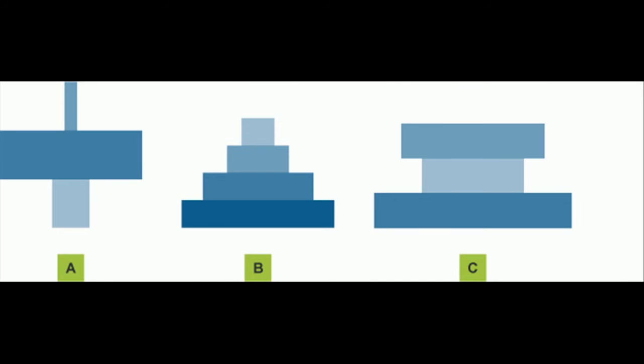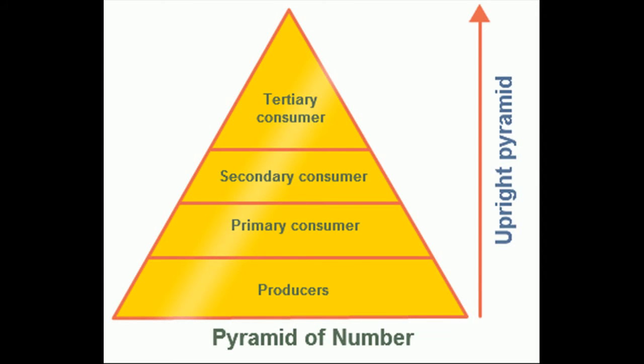The three types of pyramid styles are: Upright Pyramid of Numbers, Partly Upright Pyramid of Numbers, and Inverted Pyramid of Numbers. The Upright Pyramid of Numbers is when each trophic level has a lesser number of individuals than the trophic level below it — producers have more individuals than the primary consumer level, and so on. This is often seen in aquatic and grassland biomes.